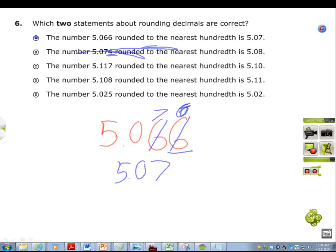D, read the next one. D, the number 5.108 rounded to the nearest hundredth is 5.11.